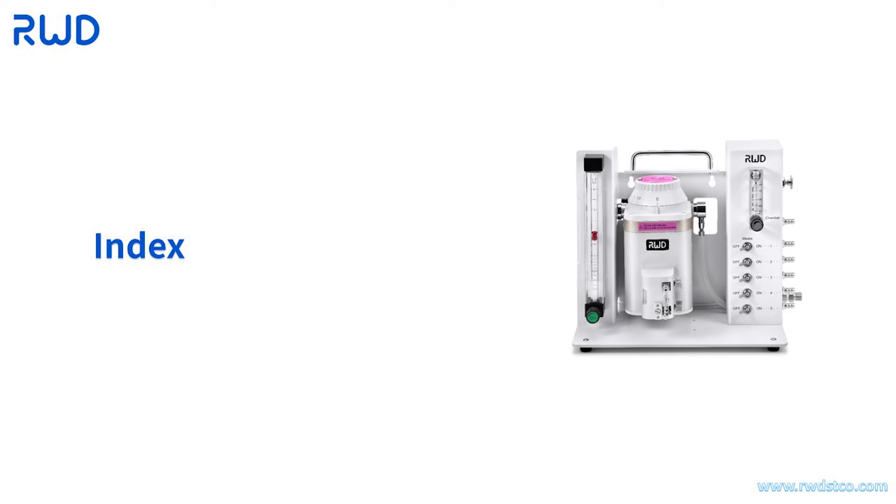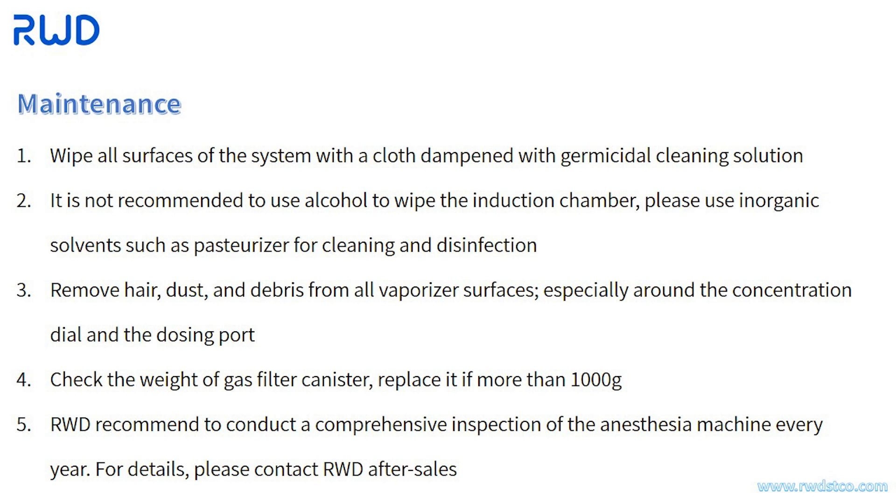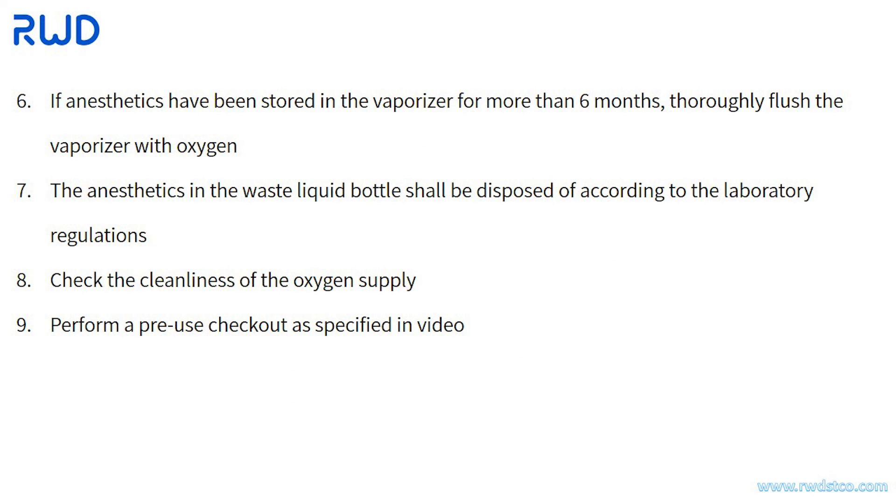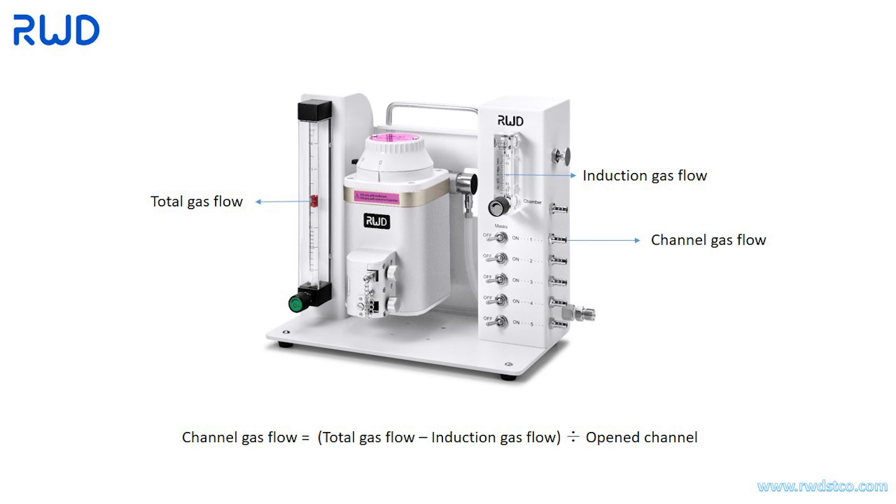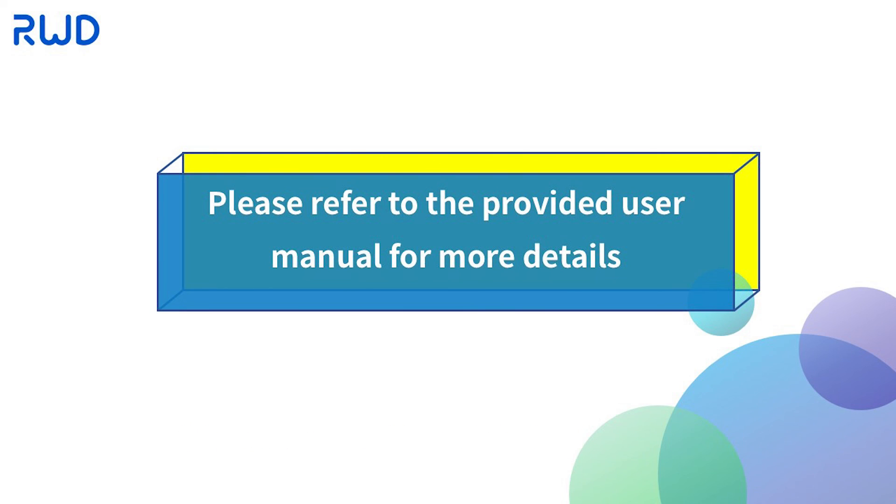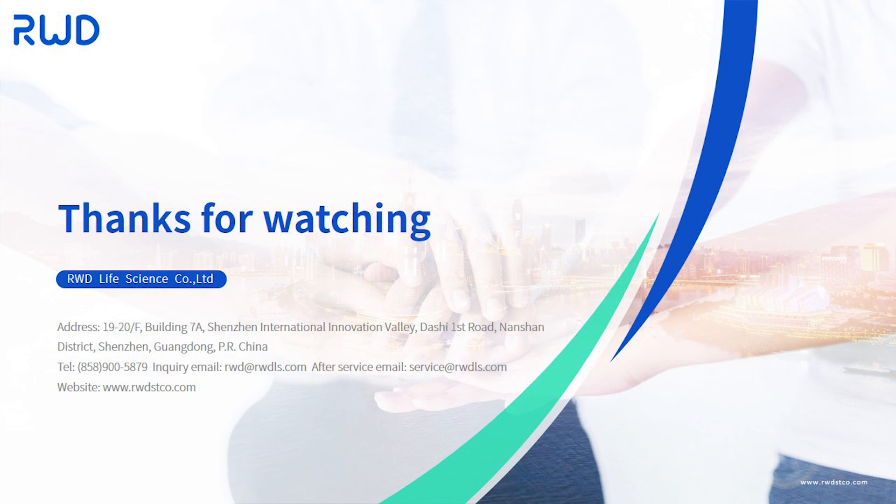Index. Please follow the above maintenance procedure regularly. Recommended parameters for anesthetizing rats or mouse. The calculation formula of channel gas flow. Please refer to the provided user manual for more details. The operation part of the Reward 5 channel small animal anesthesia machine is finished. Thank you for watching.